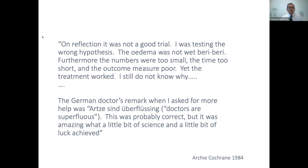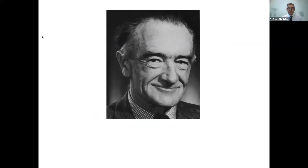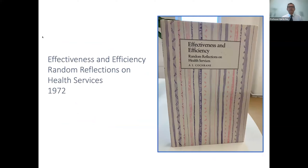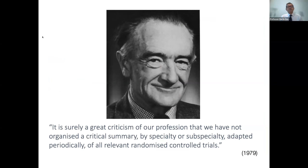After the war, Cochrane went on and became a chest physician in Wales. The next key part of his story is his book, 'Effectiveness and Efficiency: Random Reflections on Health Services,' which he published in 1972. Cochrane himself said this focused on a simple idea: the value of randomized controlled trials in improving the National Health Service in the UK. And this is perhaps the most important quote from the book: 'It is surely a great criticism of our profession that we have not organized a critical summary by specialty or subspecialty, adapted periodically, of all relevant randomized controlled trials.'